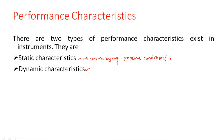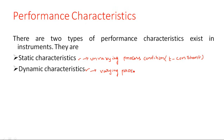In static characteristics, time is constant — time will not vary. In dynamic characteristics, all the parameters we are going to study are varying with respect to time. These are varying process conditions.